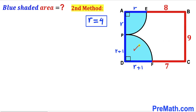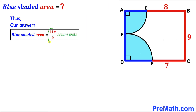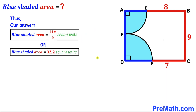Focusing on the larger quarter circle with radius uppercase R: since R = r + 1 and r = 4, we get R = 5. Using both methods we confirm r = 4 and R = 5, so the blue shaded area is 41π/4 square units, which equals approximately 32.2 square units. That's our final answer. Thanks for watching — please subscribe for more videos.